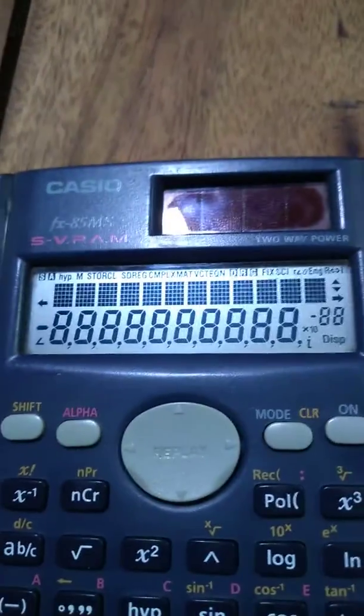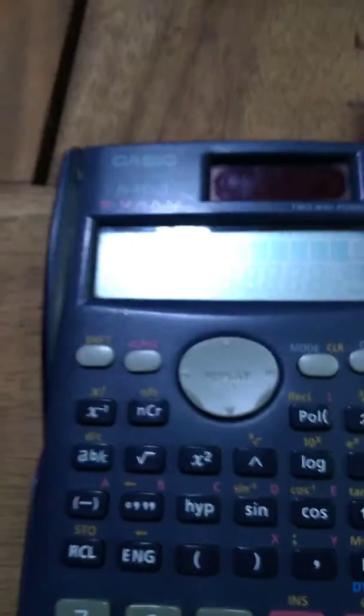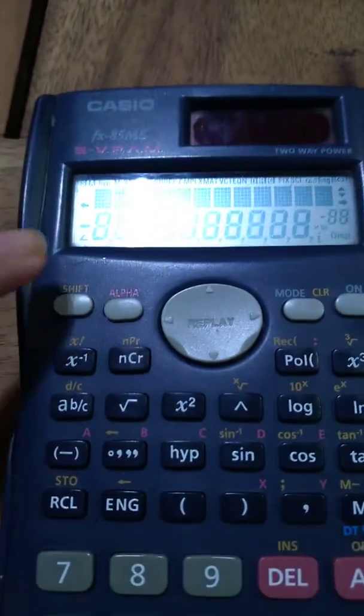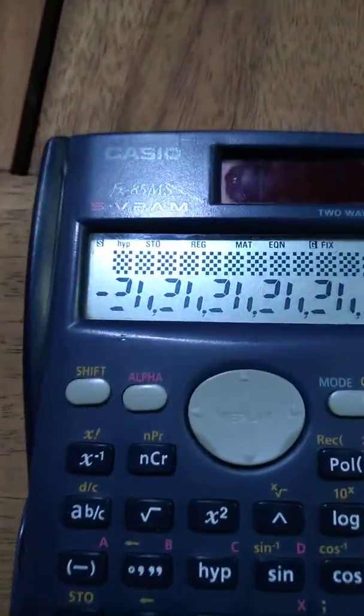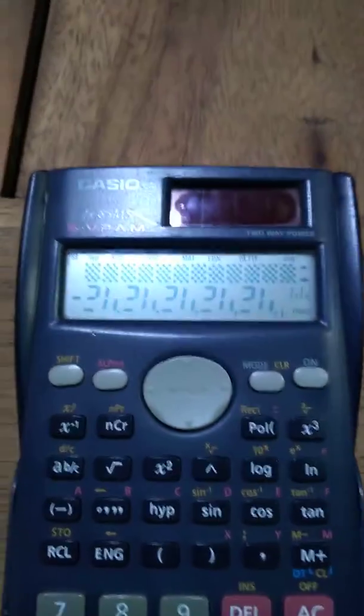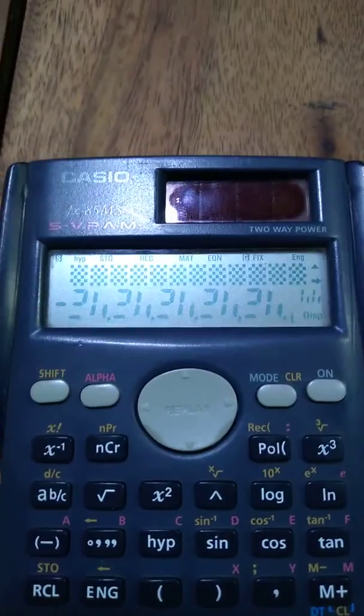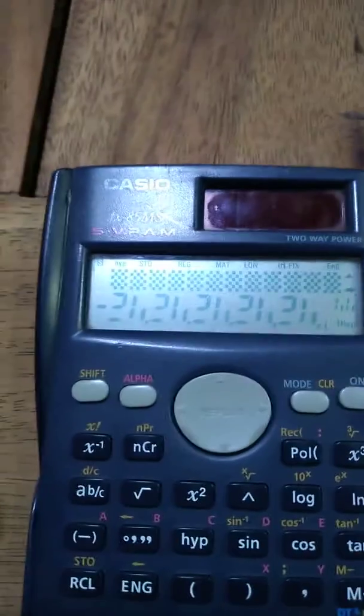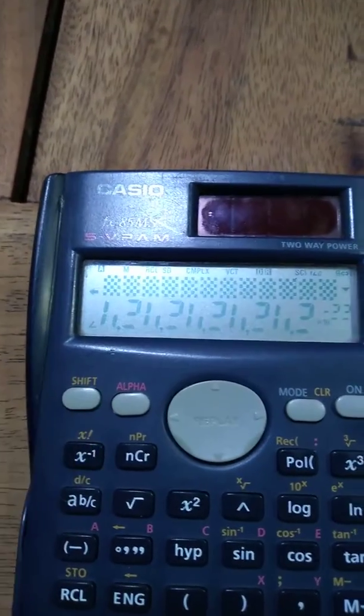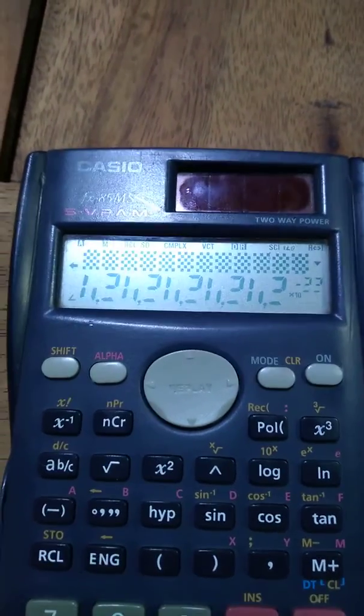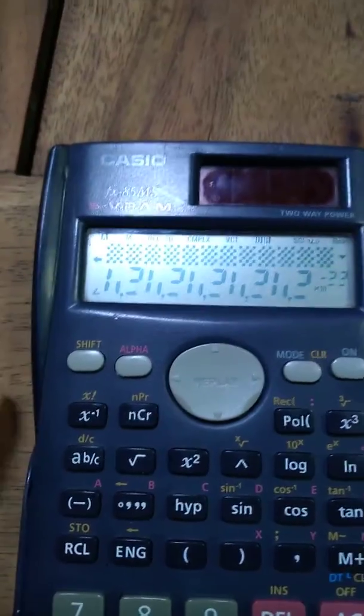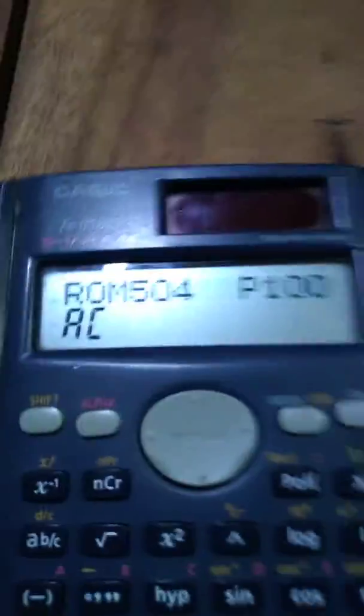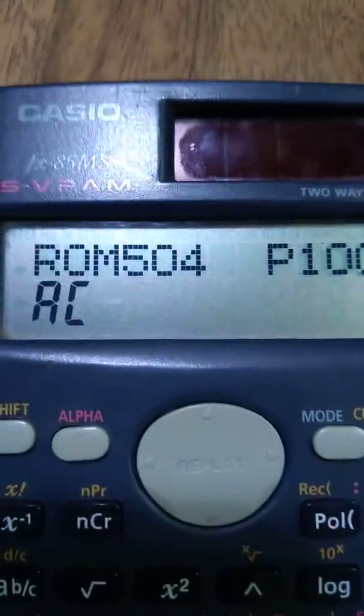This is the turn-off display, this is the gibberish display. Press Shift for the second gibberish display, and press Shift again. It says ROM504 P100, and then you press AC.